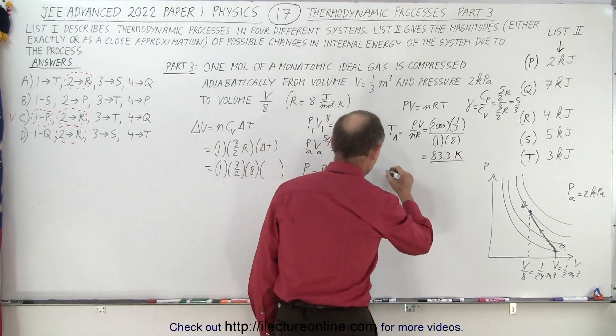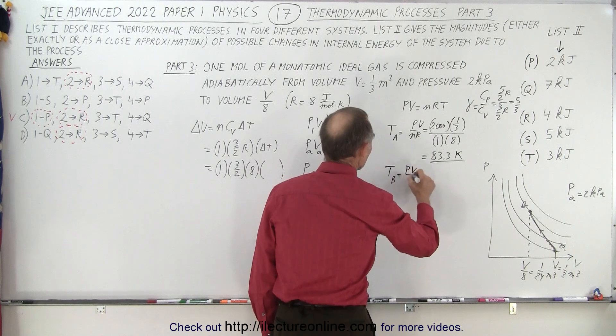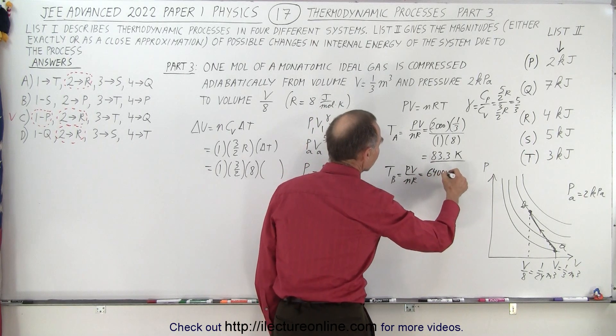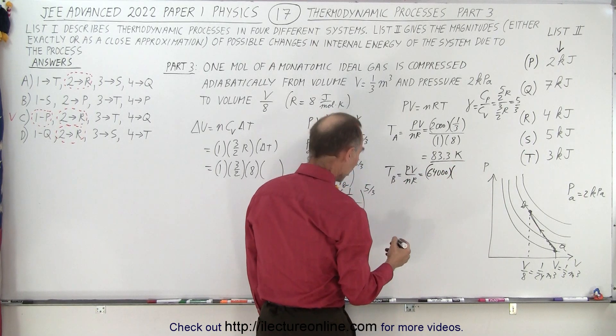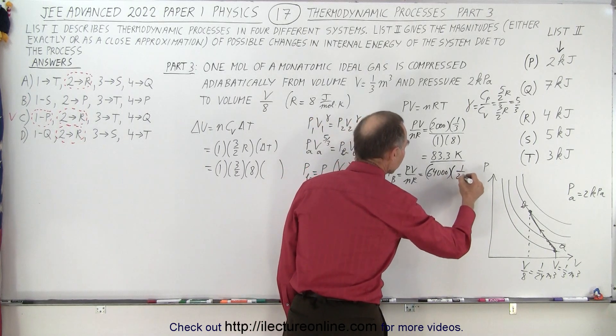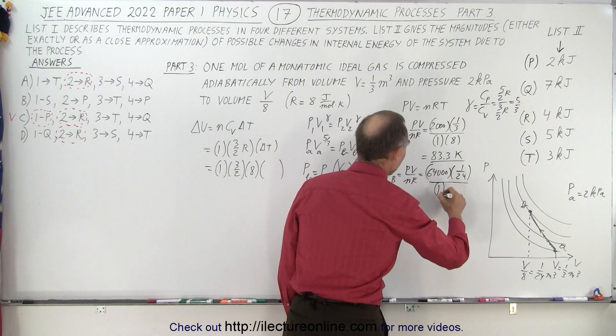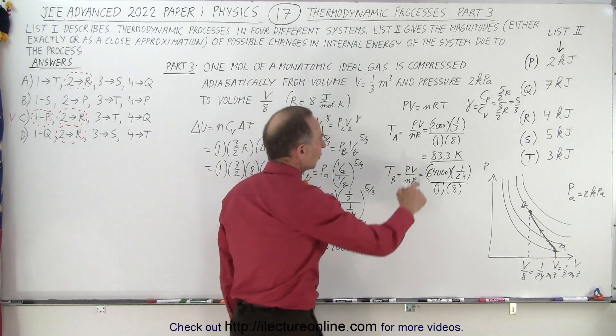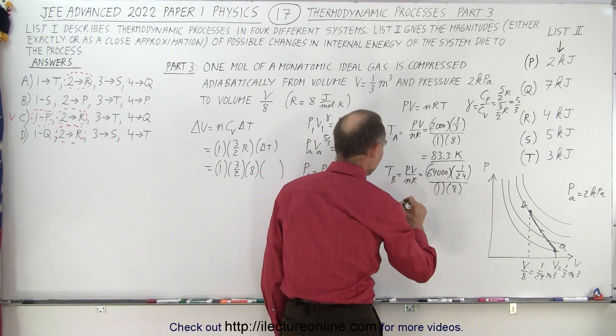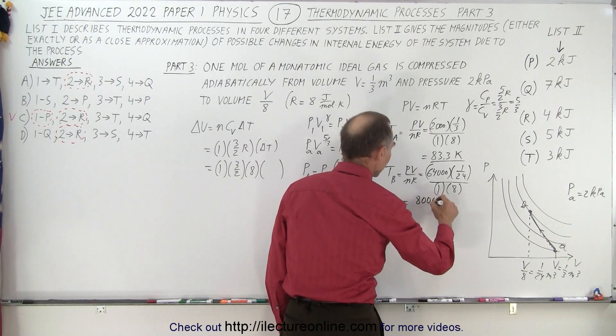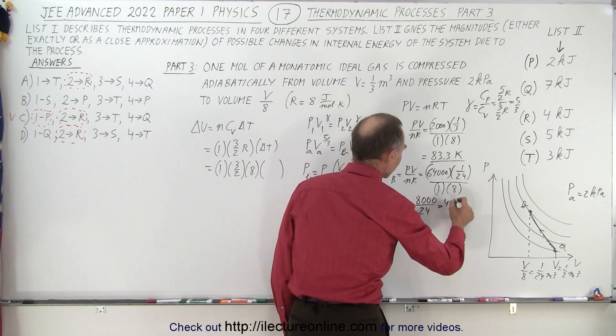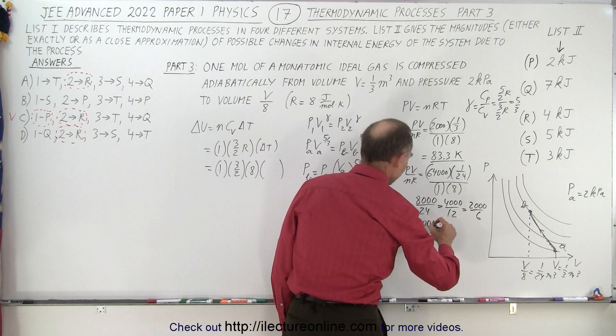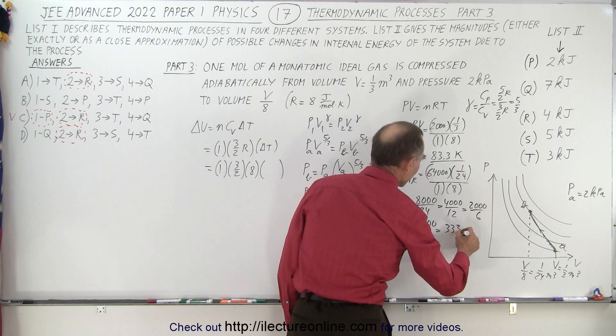Now the temperature at B equals PV over NR. The pressure there would be 64,000, the volume would be 1 over 24, divided by 1 and R is 8. 8 goes into 64,000, that's 8,000 times. That would be 8,000 divided by 24, which is 4,000 divided by 12, which is 2,000 divided by 6, which is 1,000 divided by 3, which is 333.3 Kelvin.